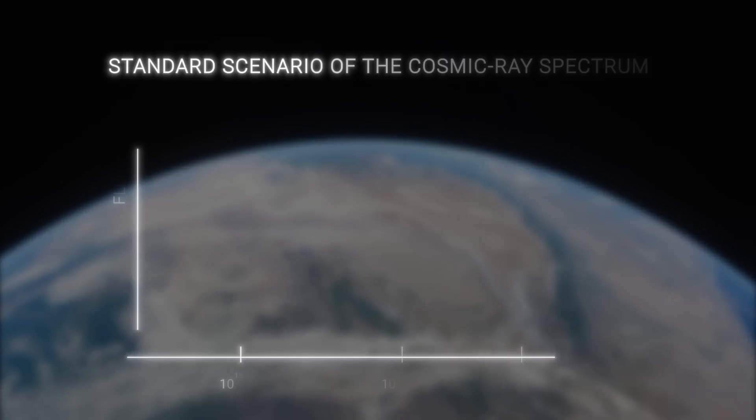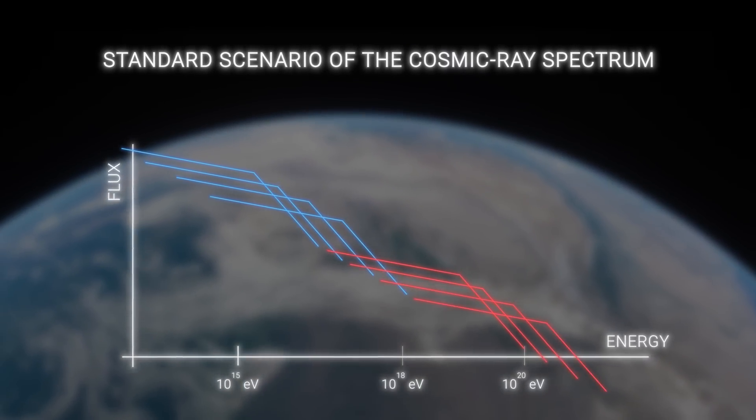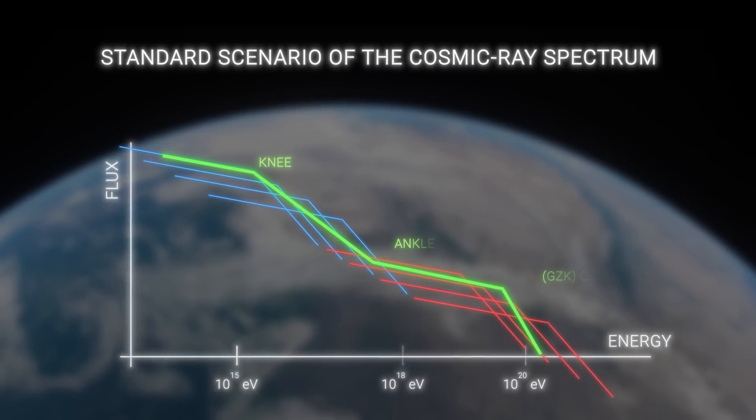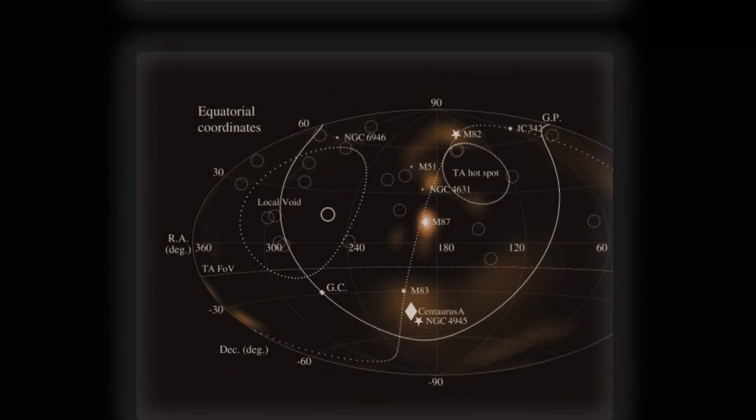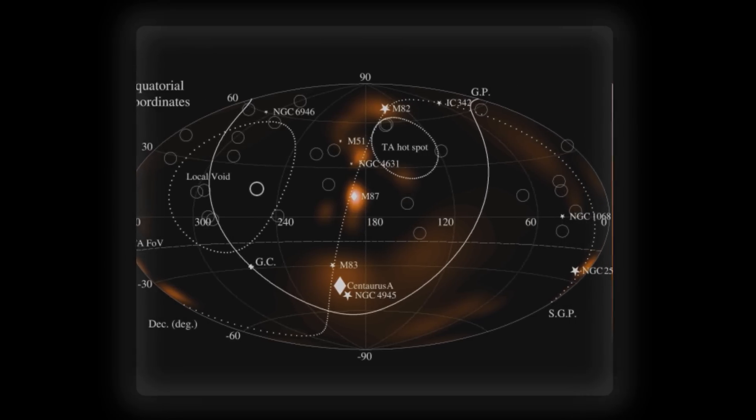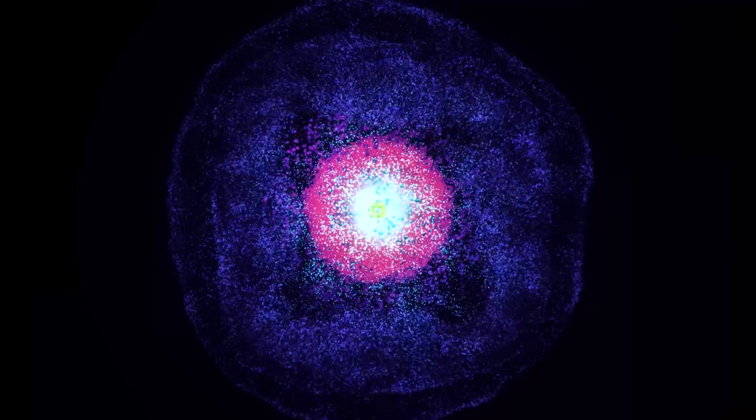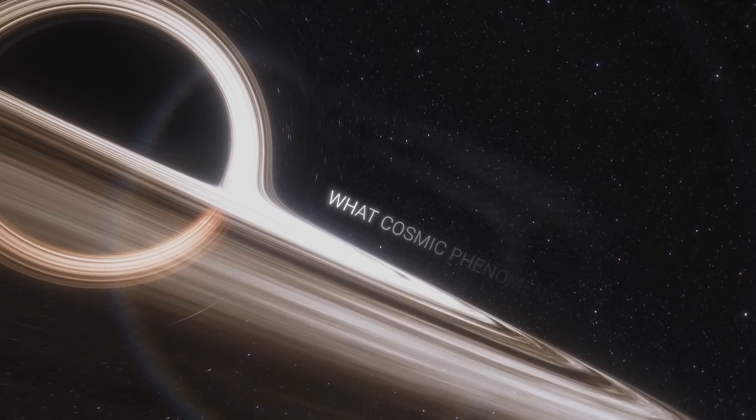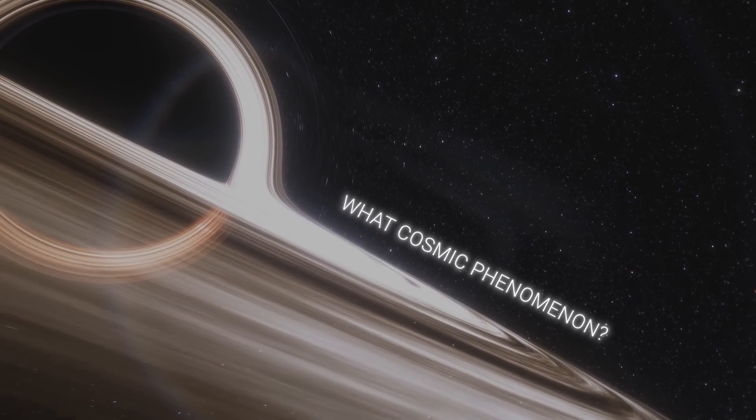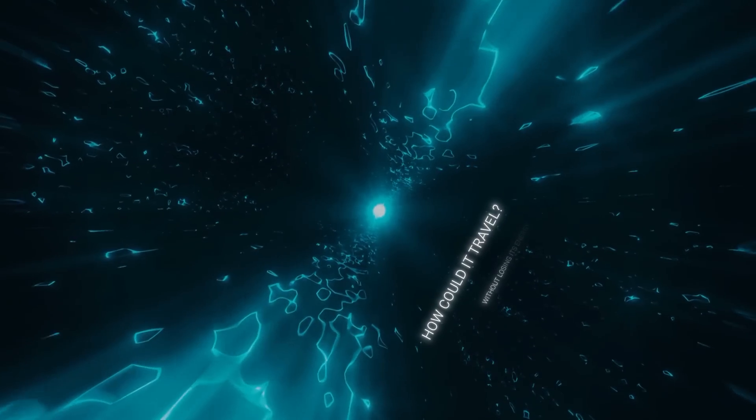The limit is important because it helps astrophysicists determine the possible origin of ultra-high energy cosmic rays. If cosmic rays with energies above this limit are observed, it suggests that their source must be relatively close by cosmic standards, within a few hundred million light-years. So let's get back to our particle. The discovery of the OMG particle raised important questions. What cosmic phenomenon could accelerate the particle to such extreme energy? How could it travel vast intergalactic distances without losing its energy?